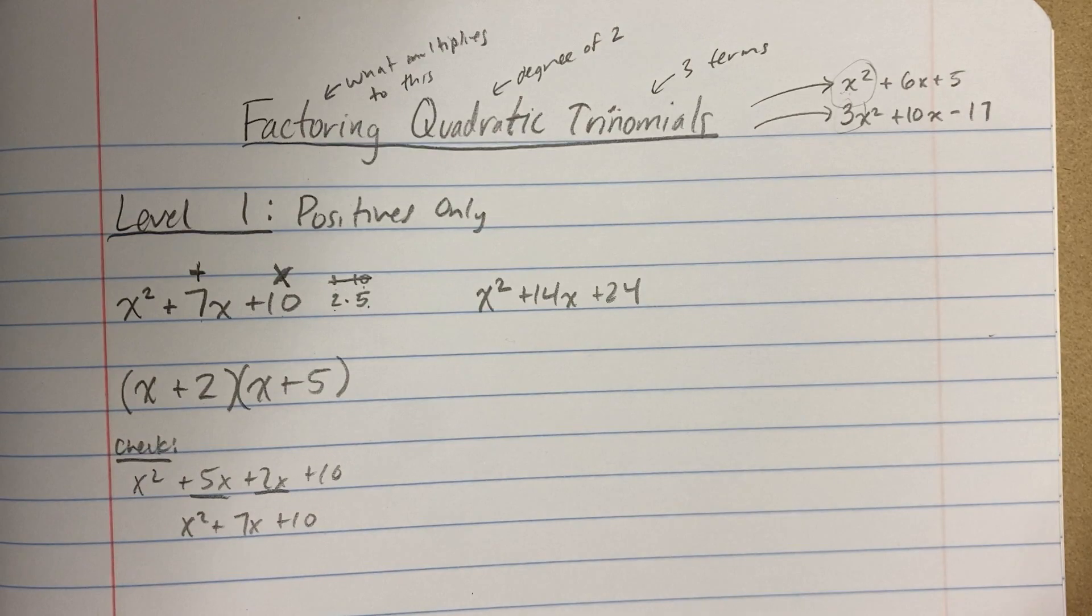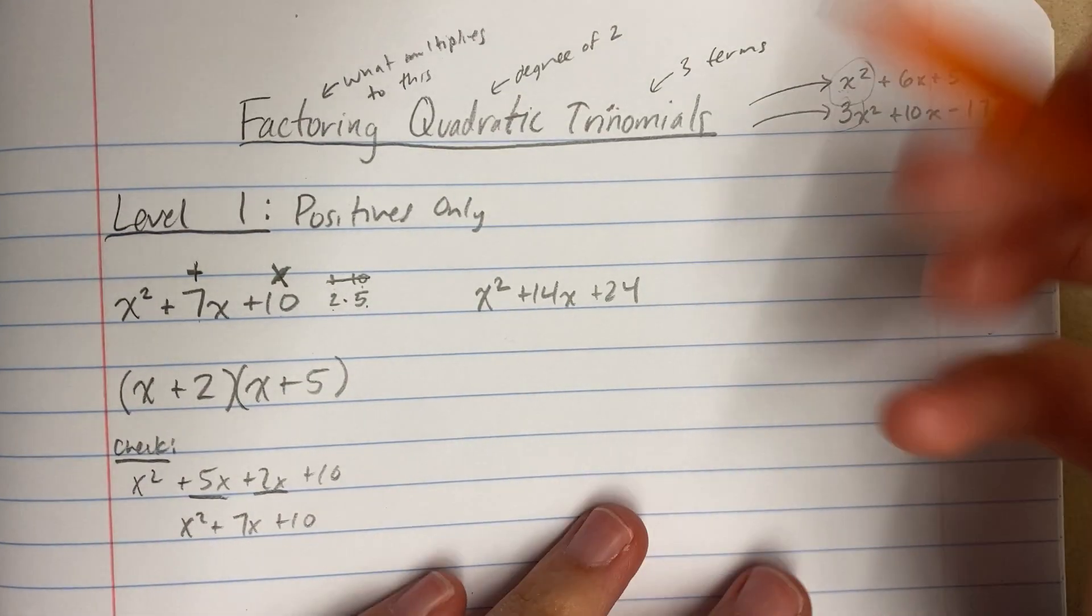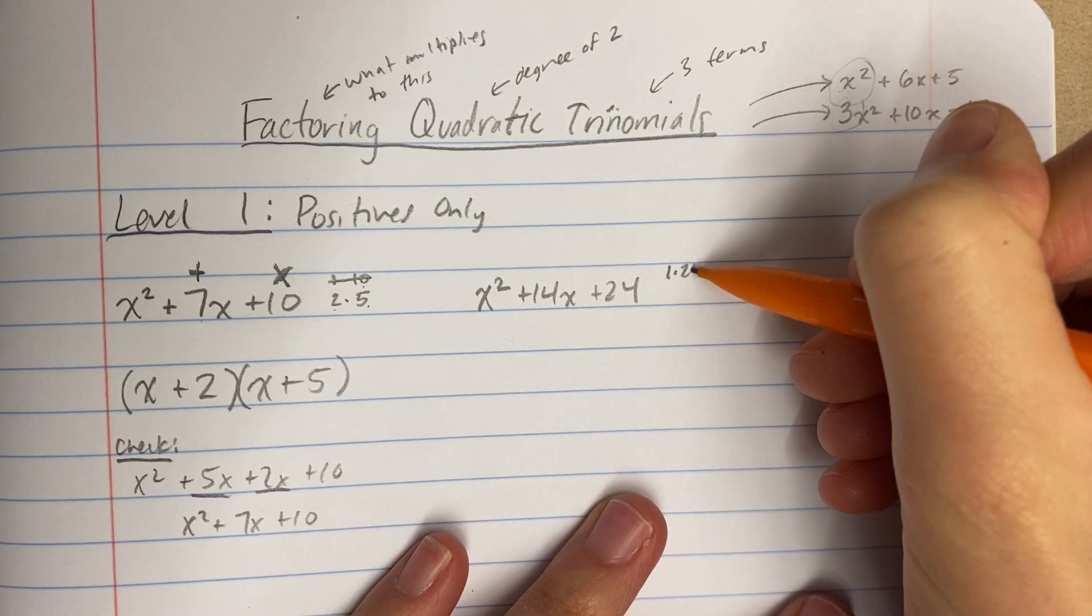Let's do another one. This one's a little trickier. Why is it trickier? Because 24 has a lot of factors.